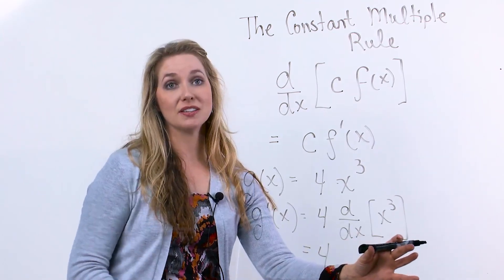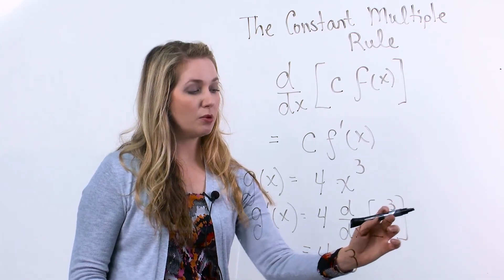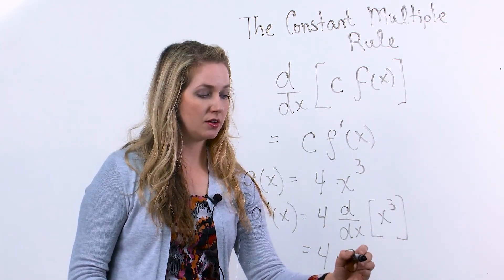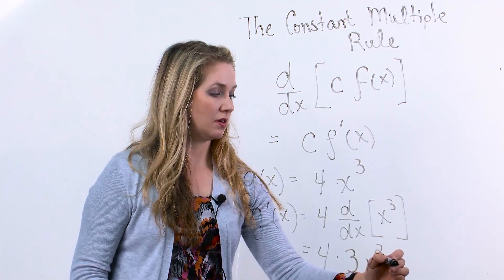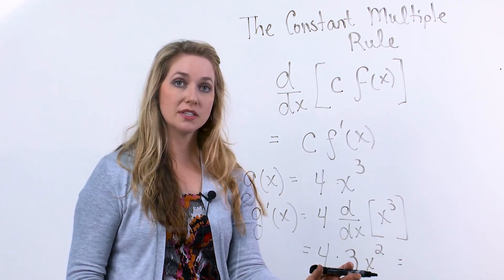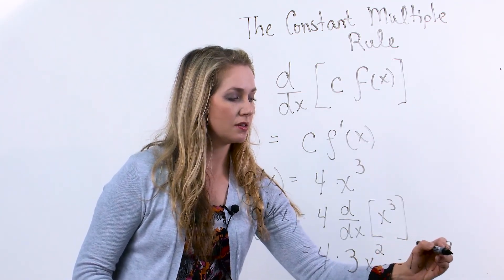And we saw previously the way you find the derivative of x to a power is the power becomes a constant multiplier and you decrease the power by 1. So here I'm going to simplify by multiplying 4 times 3 and I get 12x squared.